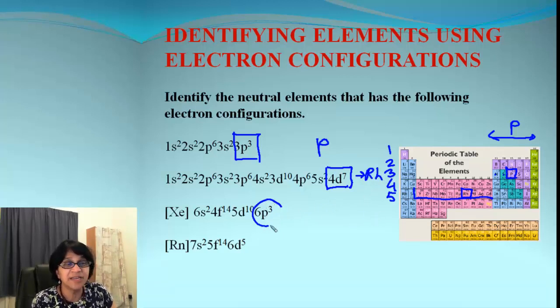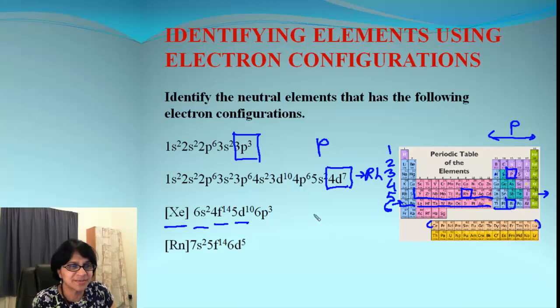Now we have 6P3 and it is after xenon. This is the abbreviated configuration. So look where is xenon. Xenon is right over here. That is xenon. So we end up getting the configuration for 6P3. This is the abbreviated configuration. So this is xenon and after xenon we are into 6 period. It is 6S2 is done. 4F14 is done. All these are taken into consideration. Then it is 5D10 is filled up and we are into 6P1, 2 and this element which is bismuth.